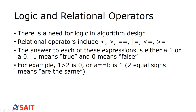For example, 1 is not greater than 2, so therefore the answer is 0. Or if a equals b — say both have a value of 3 — then 3 equals 3, and the truth value is 1. That's how relational operators work.